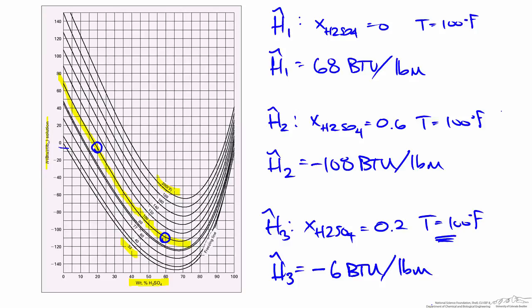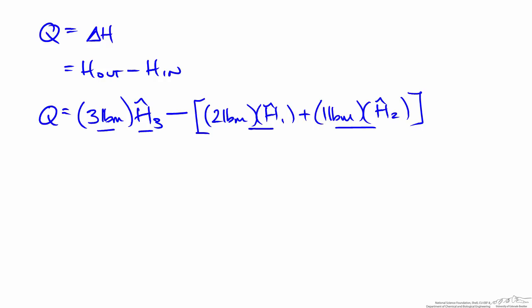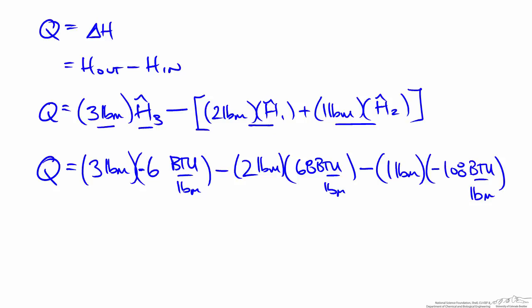With the specific enthalpy of each stream known from the diagram, we go back to the energy balance to solve for the heat released. The heat released equals the change in total enthalpy, where each stream's total enthalpy is mass times specific enthalpy. Plugging those values in, we find that Q equals negative 46 BTUs. The negative sign indicates an exothermic process, meaning 46 BTUs of heat is released.